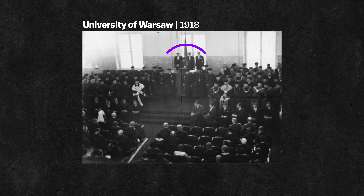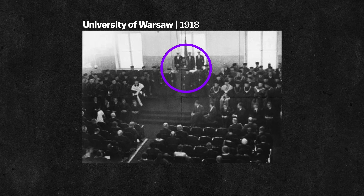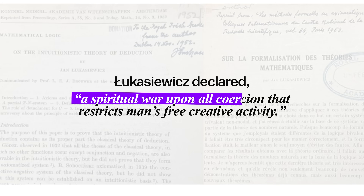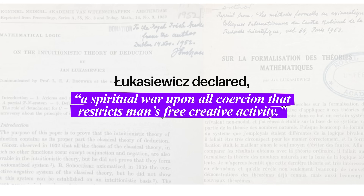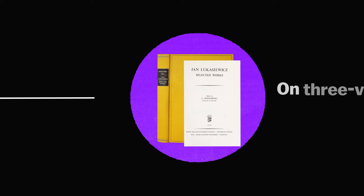In 1918, Łukasiewicz delivered a lecture at the University of Warsaw in which he declared a spiritual war upon all coercion that restricts man's free creative activity. He rejected Aristotle's law of the excluded middle, which restricted propositions to true or false, and instead proposed his own logic system.